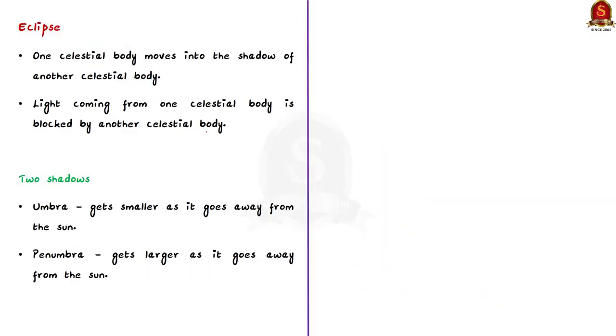An eclipse occurs when one celestial body, such as a moon or any planet, moves into the shadow of another celestial body. Here, the light coming from one celestial body is blocked by another celestial body.